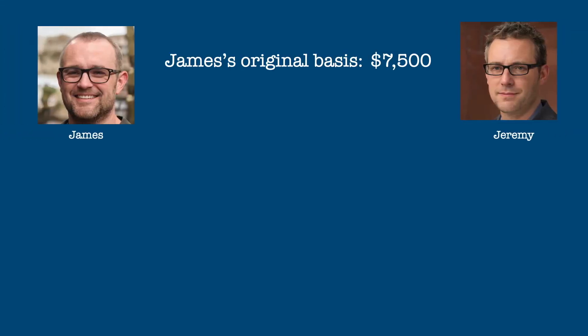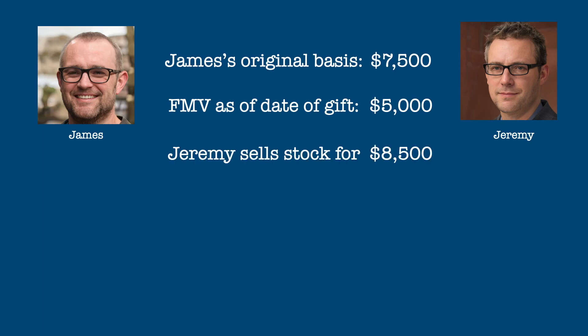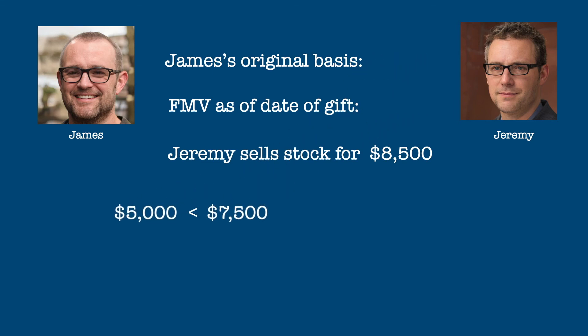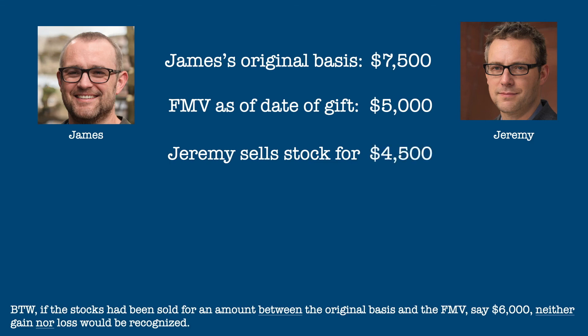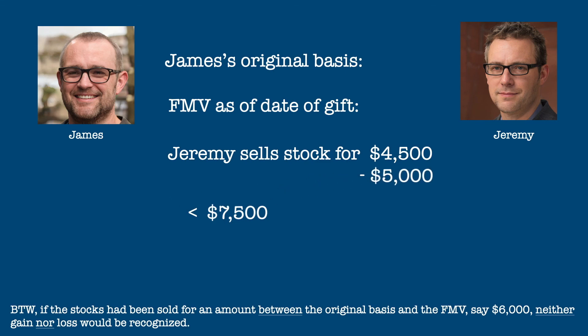Here's an example of how that works. James gave stocks with an original basis of $7,500 to his friend Jeremy. As of the date of the gift, the stocks had a fair market value of $5,000. Two months later, Jeremy sells the stocks for $8,500. Since the fair market value of the stocks is less than James's original basis, Jeremy uses James's original basis to calculate the gain, which would be $1,000. If Jeremy had instead sold the stocks for only $4,500, the basis would be the fair market value of the stocks as of the date of the gift, yielding a loss of $500.